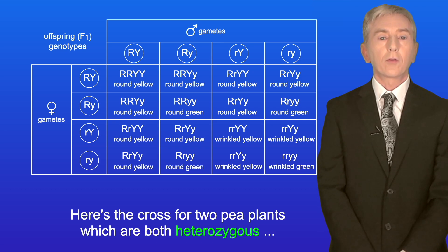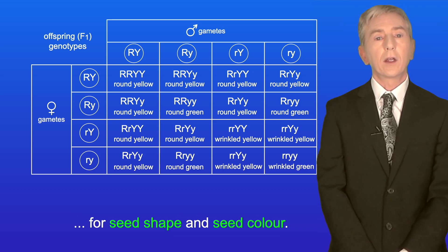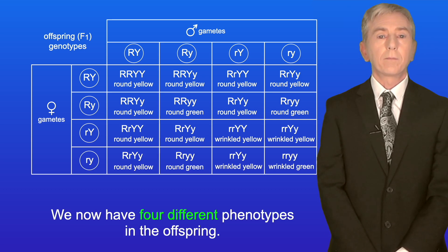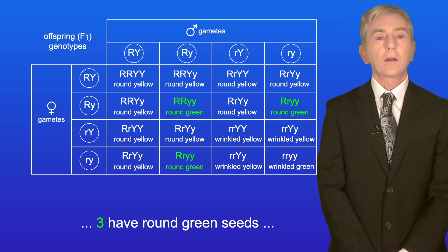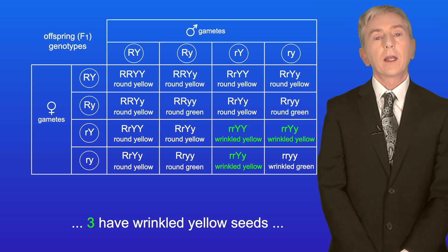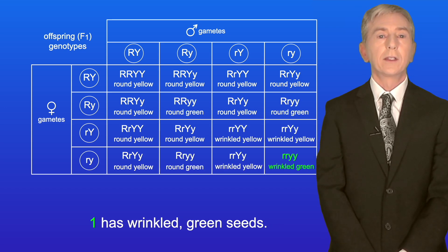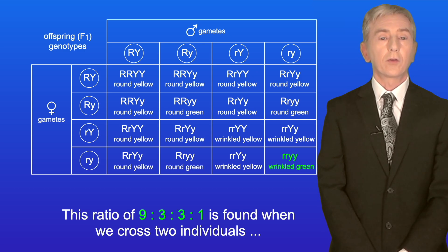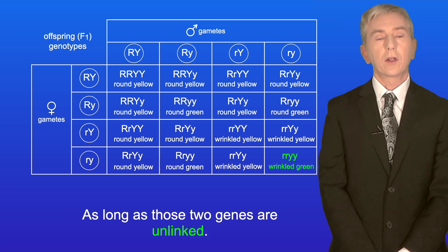Here's the cross for two pea plants which are both heterozygous for seed shape and seed colour. We now have four different phenotypes in the offspring: nine have the phenotype round yellow seeds, three have round green seeds, three have wrinkled yellow seeds, and one has wrinkled green seeds. This ratio of 9:3:3:1 is found when we cross two individuals heterozygous for two different genes, as long as those two genes are unlinked.